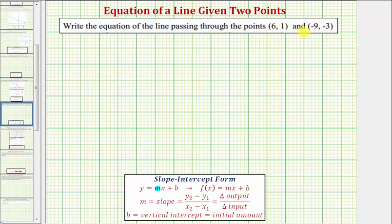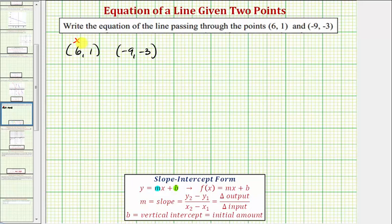In this case, because we have two points, the slope would be equal to the change of y divided by the change of x. And b is equal to the vertical intercept, which would be the ordered pair zero comma b. So for the first step, we'll find the slope of the line passing through these two points. Starting with the two given points six comma one and negative nine comma negative three, to keep things organized, let's call this ordered pair x sub one comma y sub one and this ordered pair x sub two comma y sub two.